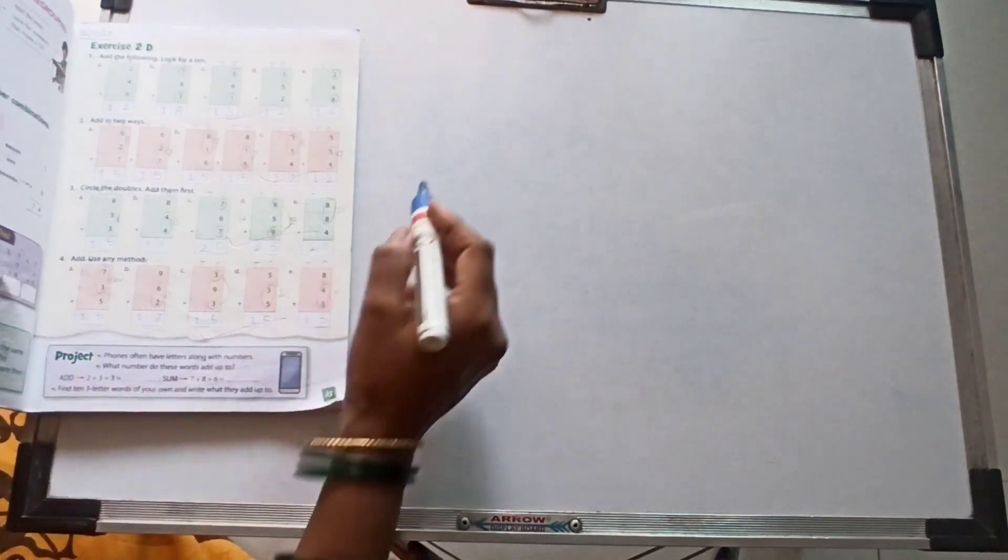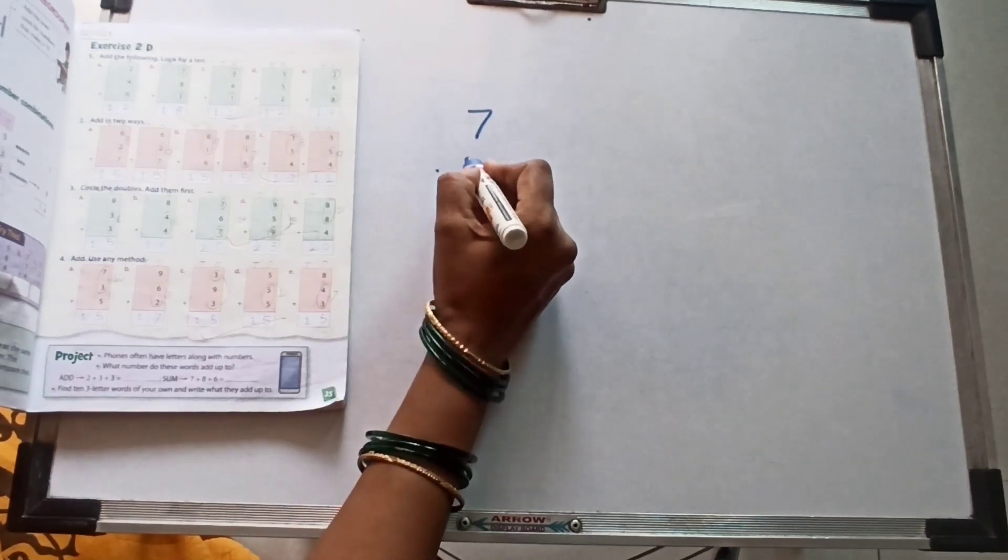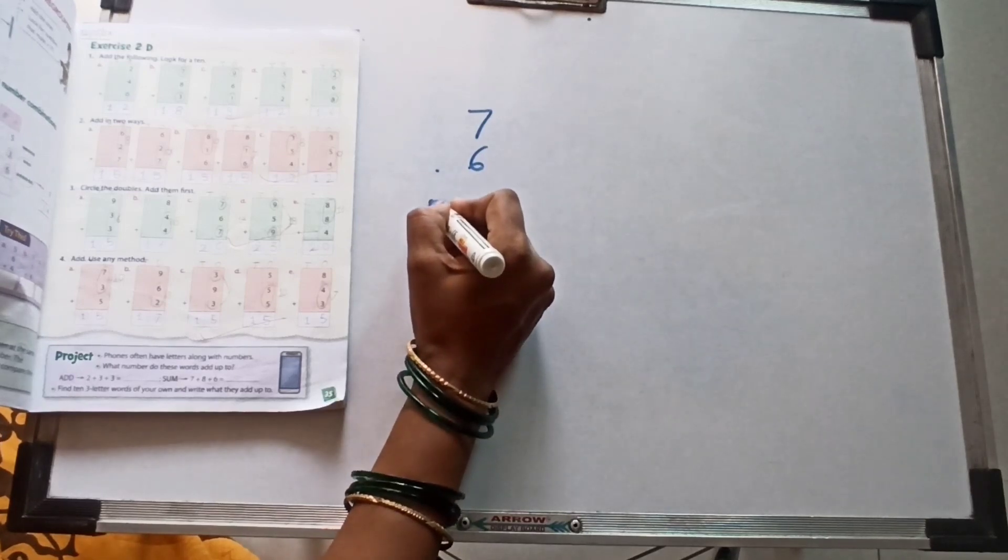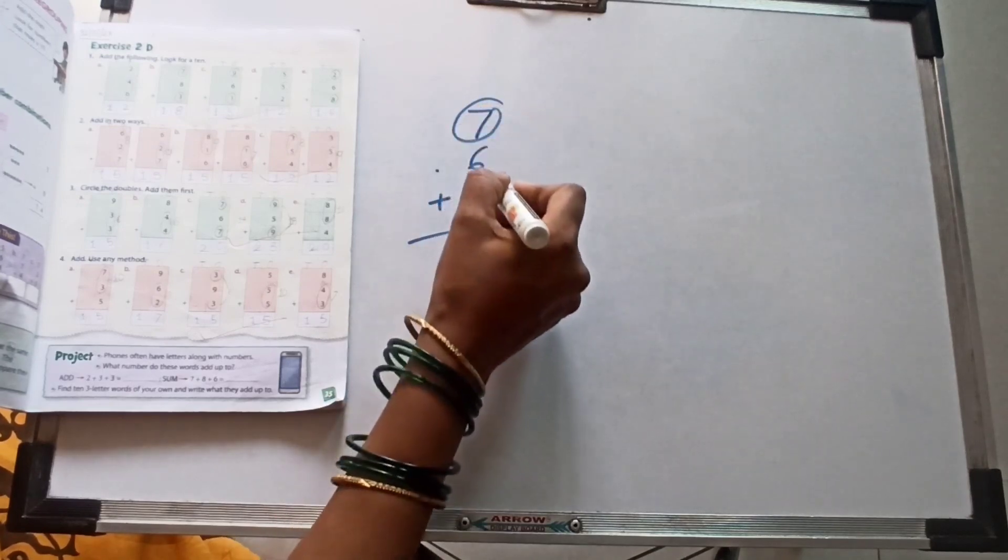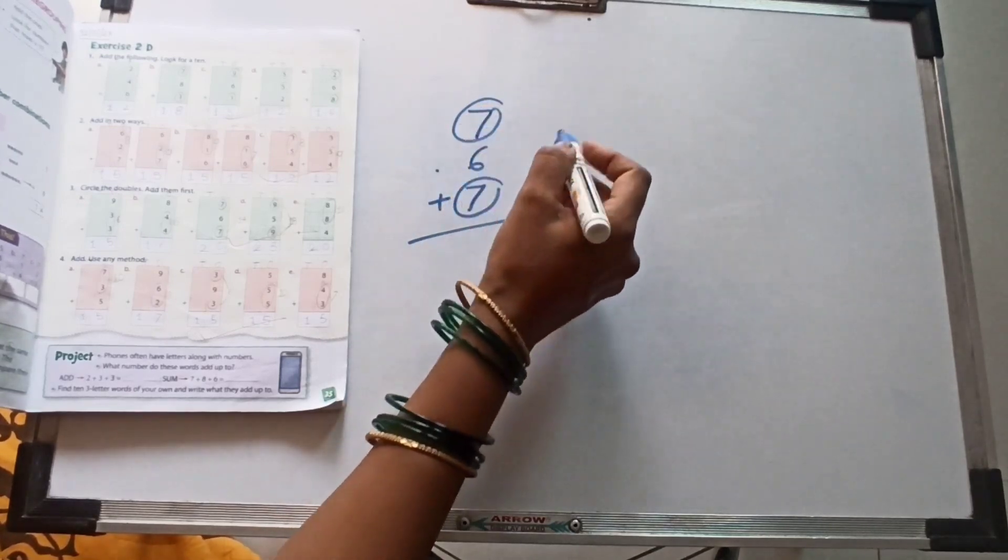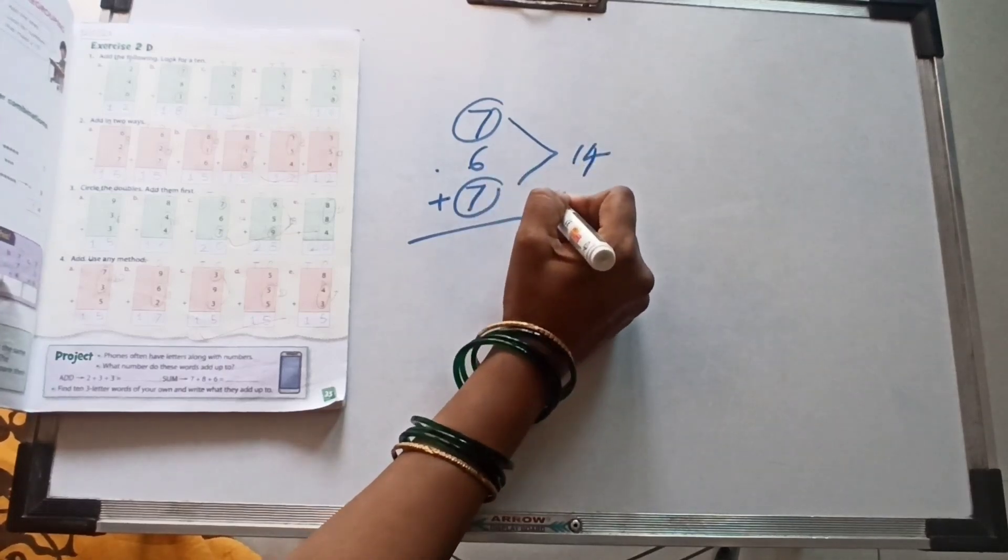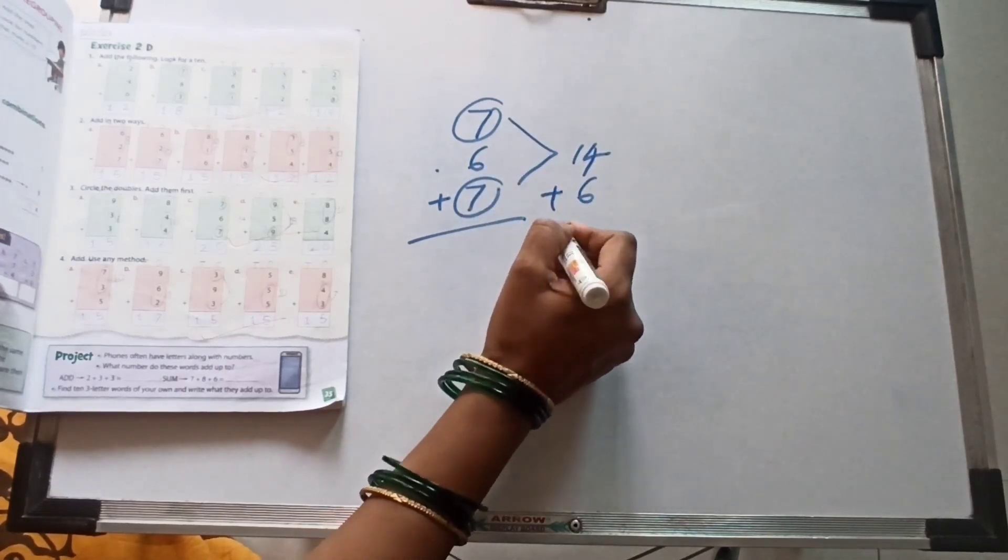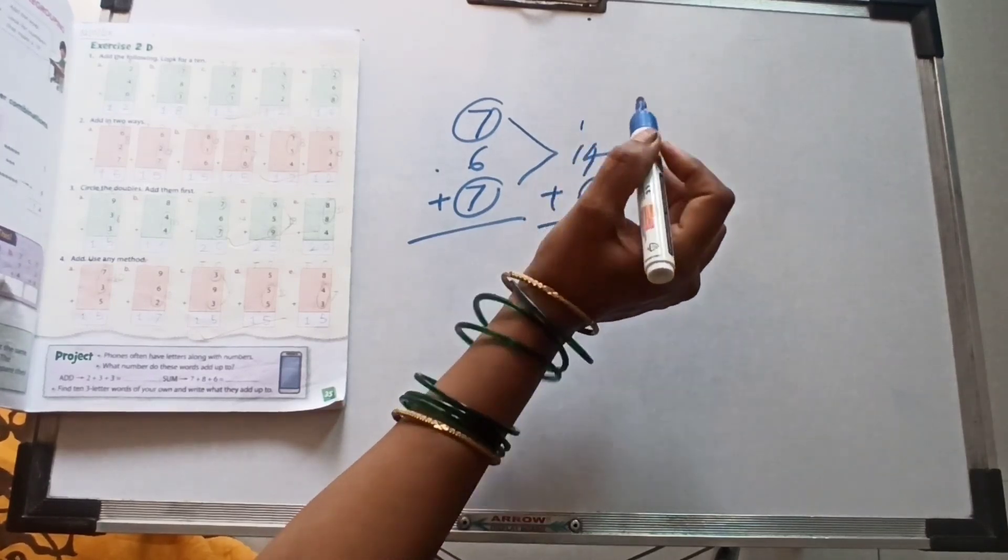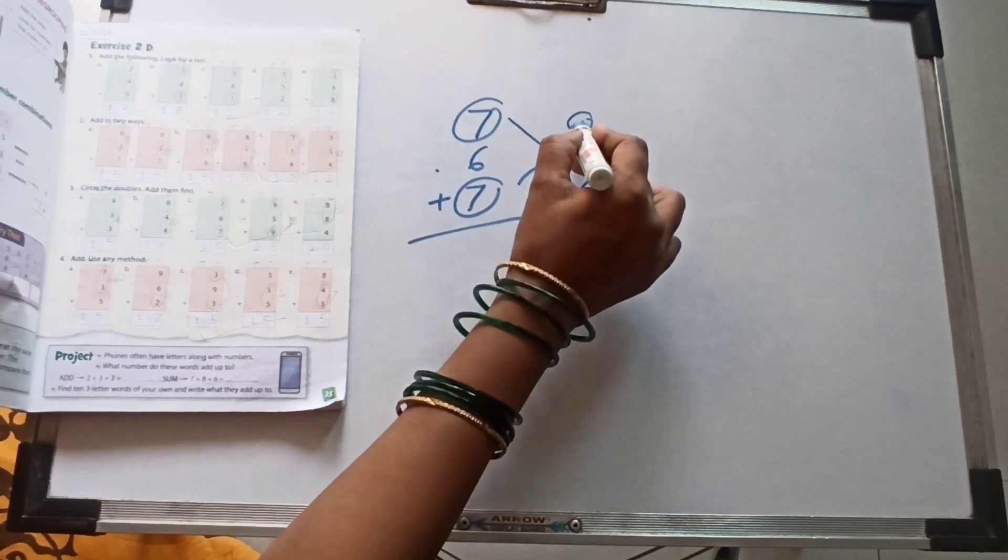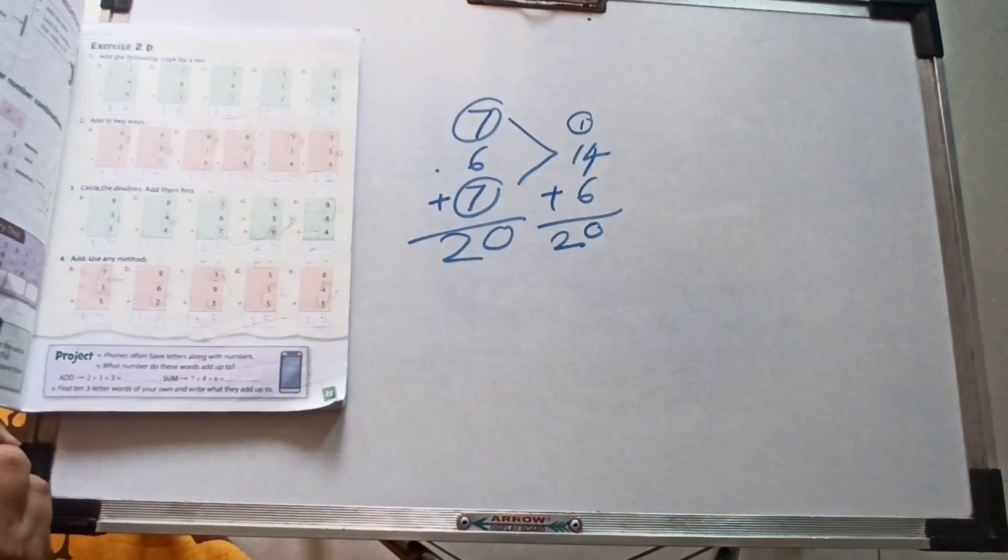The next C one: 7 plus 6 plus 7. Circle this one. Same number, 7 twos are 14. And 14 plus 6. 4, 6, then 1 carrying over. And 1 plus 1, 2. Then our answer is 20.